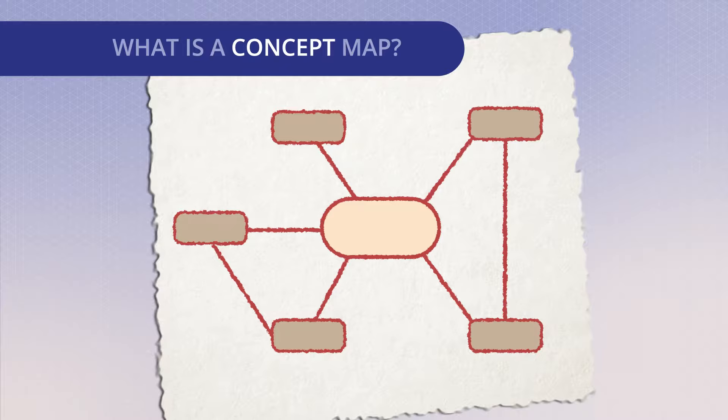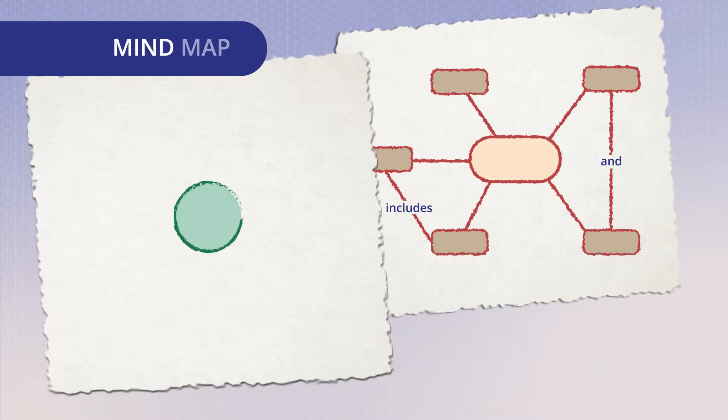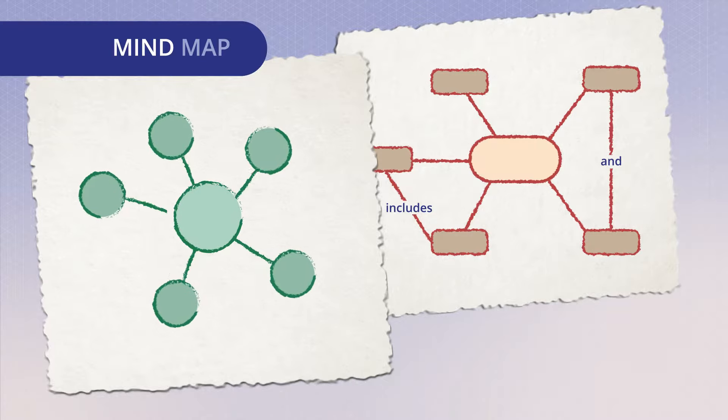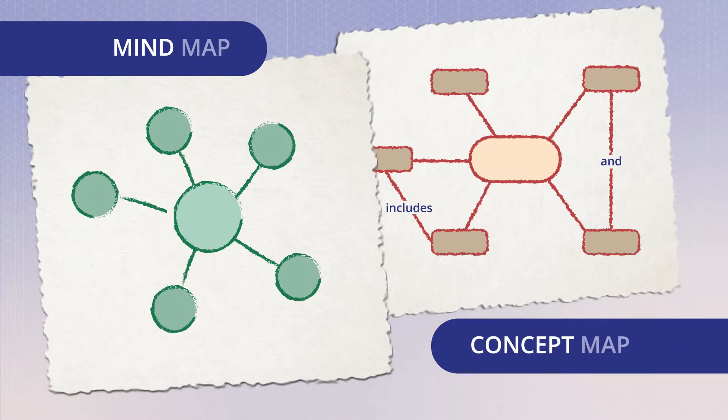Concept maps use linking phrases between concepts to explain connections, which typically means the map can be read like a sentence. While mind maps only focus on one main concept and its supporting topics, concept maps show multiple complex concepts and the relationships between them.